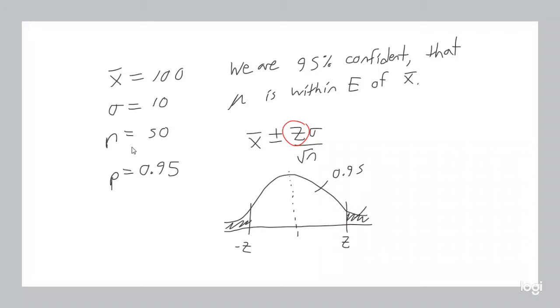we know that the size of these tails is 0.025. How do we get 0.025? Well that's just 1 minus 0.95 divided by 2.